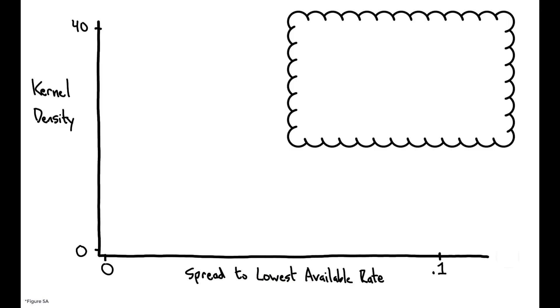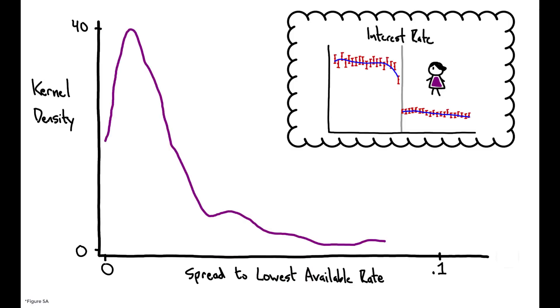For borrowers just to the right of a credit score threshold, the density of this spread is concentrated close to zero, indicating that most borrowers are already receiving close to their best available rate. But those just to the left of a threshold exhibit much higher average spreads, indicating that the potential benefits of searching for another offer are high.